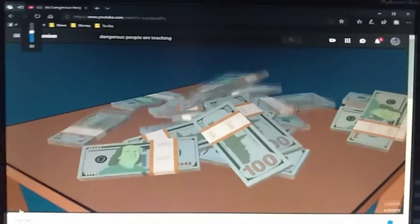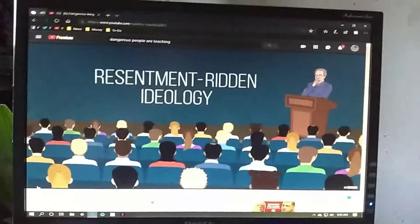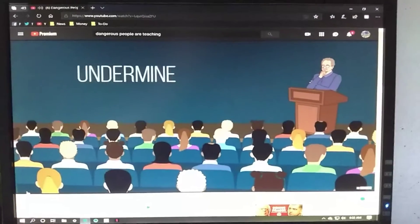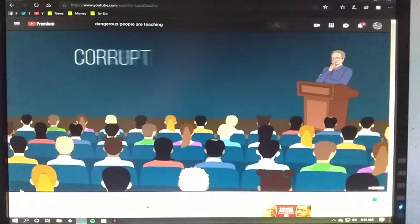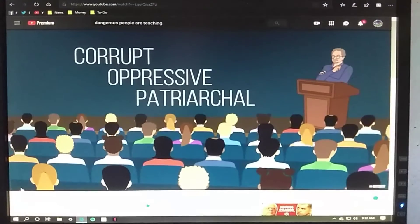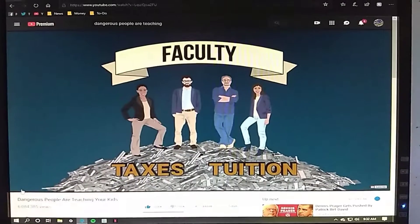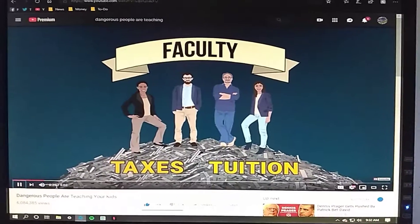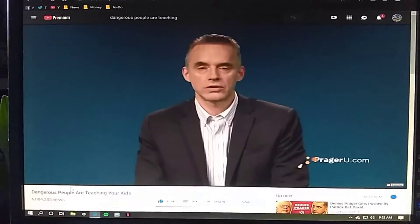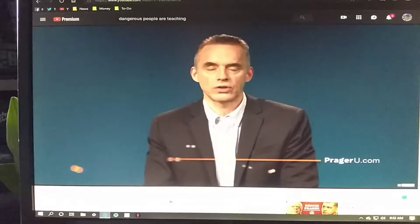You may not realize it, but you are currently funding some dangerous people. They are indoctrinating young minds throughout the West with their resentment-ridden ideology. They have made it their life's mission to undermine Western civilization itself, which they regard as corrupt, oppressive, and patriarchal. If you're a taxpayer or paying for your kid's liberal arts degree, you're underwriting this gang of nihilists. You're supporting ideologues who claim that all truth is subjective.